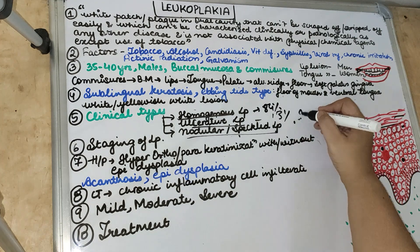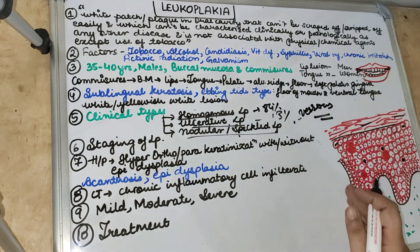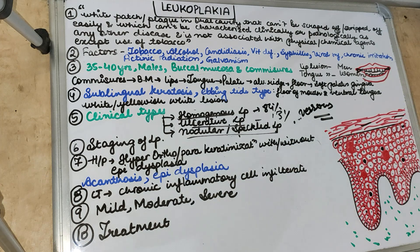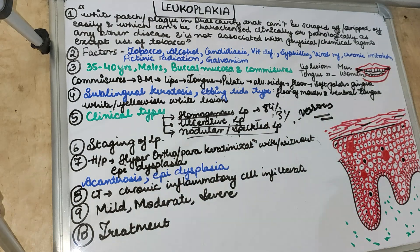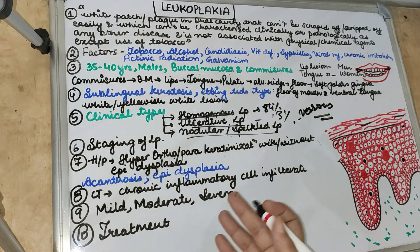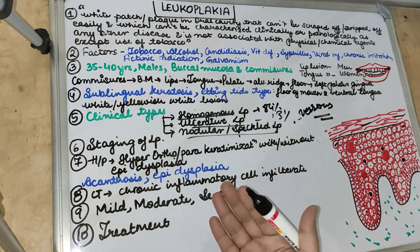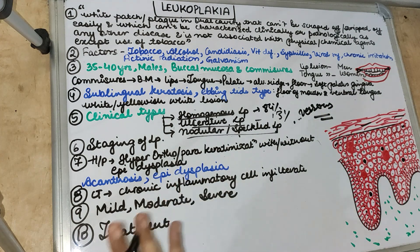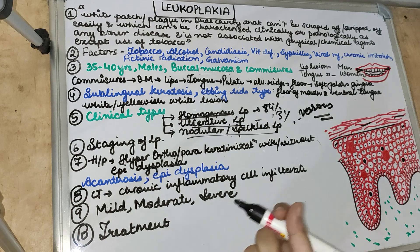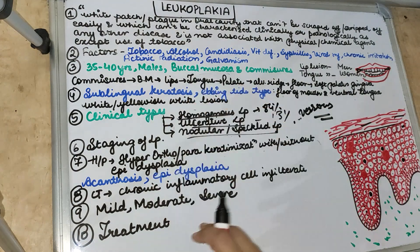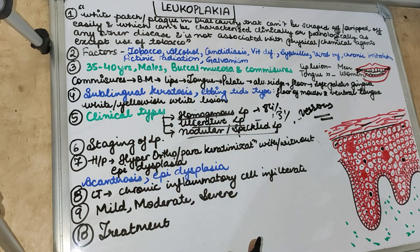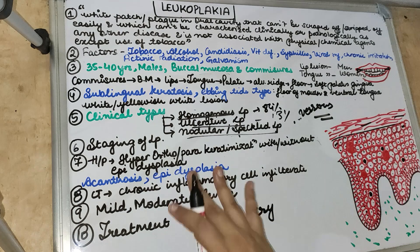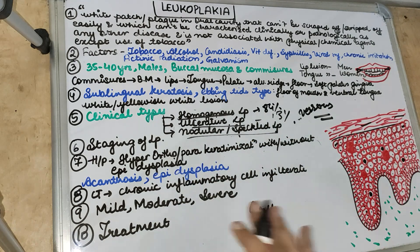The verrucous type of leukoplakia shows verrucous proliferations above the surface of the mucosa — lesions are sharp or blunt projections that are heavily keratinized. Proliferative verrucous leukoplakia is usually seen in females and non-tobacco chewers. It is exophytic with multiple keratotic plaques and rough surfaces, and most commonly transforms into squamous cell carcinoma or verrucous carcinoma. Erythroleukoplakia is a combination of erythroplakia plus leukoplakia.